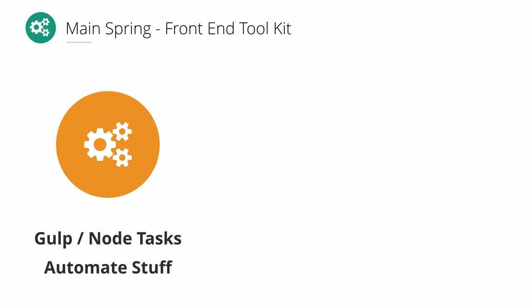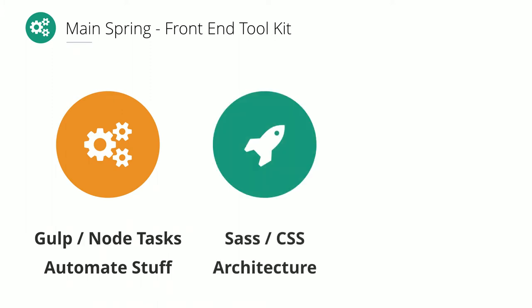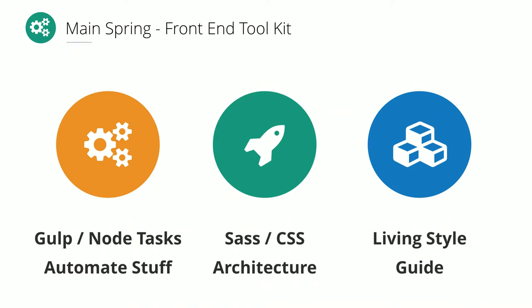Mainspring has three main pieces: first, automated task tools built using Gulp and Node — as we write website code, it checks for correct syntax agreed upon as a team, optimizes images, and manages things like icon sets. Second, a very opinionated structure on how to organize your code and name things inside the theme — an architectural choice that comes pre-baked with it.